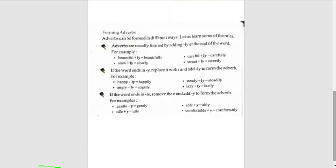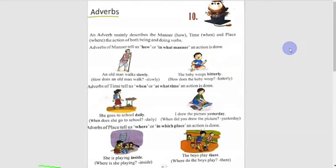Steady plus ly equals steadily, lazy plus ly equals lazily. If the word ends in 'le', remove the 'e' and add 'y' to form the adverb. For example, gentle plus y equals gently, comfortable plus ly equals comfortably.